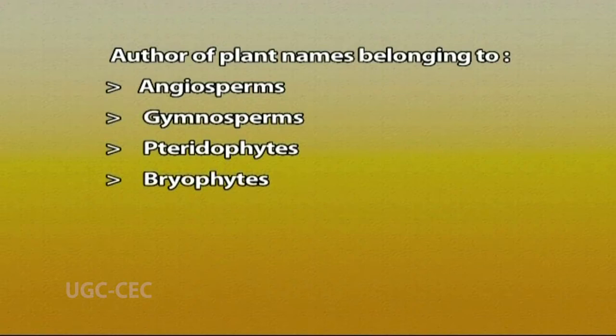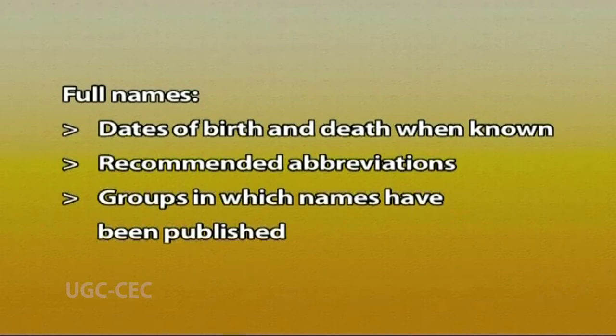One more aid is Index to Authors of Plant Names. Since scientific names are given by different taxonomists, there has to be an index whereby all scientific names along with their authors are published. This monumental work was published by Brummitt and Powell in 1992 from the Royal Botanic Gardens. It is an index of authors of plant scientific names, including authors of angiosperms, gymnosperms, pteridophytes, bryophytes, algae, fungi, and fossil plants. For each author, it provides full names, dates of birth and death when known, recommended abbreviations, and groups in which names have been published.